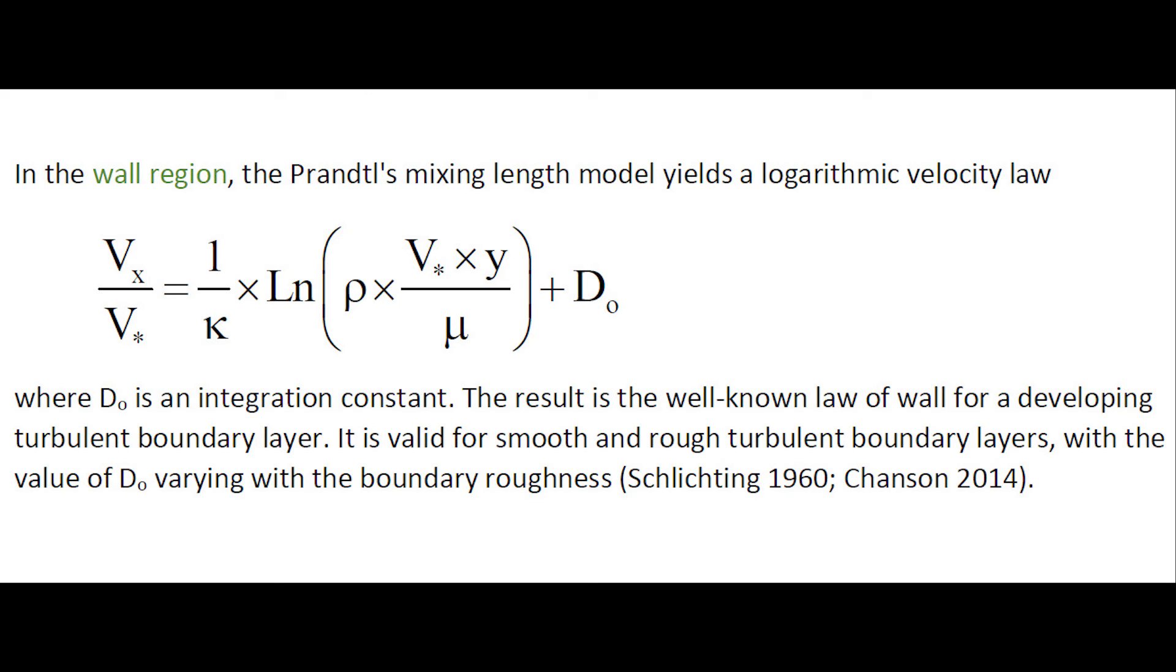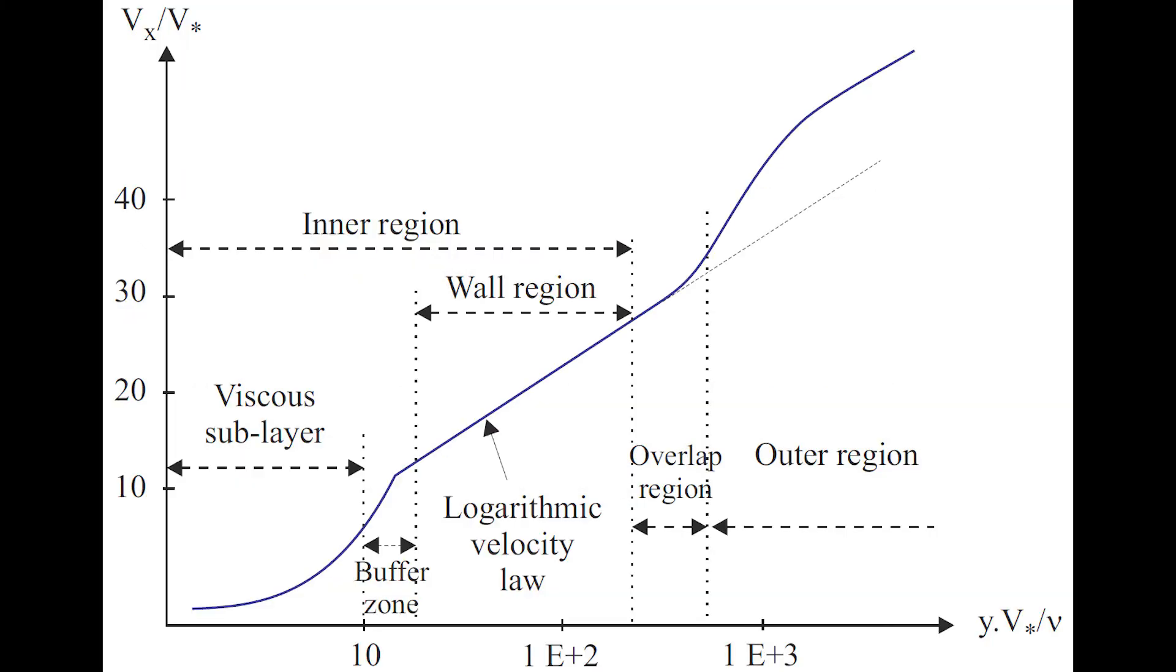In the wall region, the Prandtl mixing length yields a logarithmic velocity law, shown here. Such a log law is very well known in smooth and rough turbulent boundary layers, with the constant varying as a function of the boundary roughness.